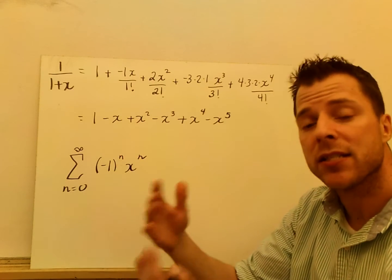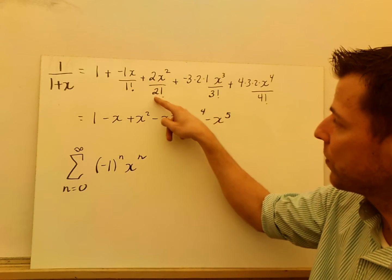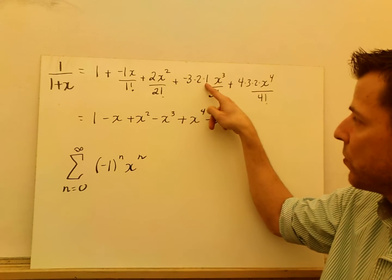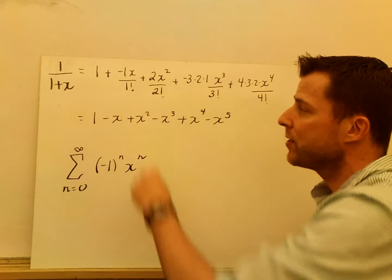So again, there's no x minus a. The minus a or the minus c is 0, so it's just going to be x. So the second term was 2x squared over 2 factorial plus negative 3, 2 times 1, x to the third over 3 factorial plus 4. So you're seeing the patterns here.